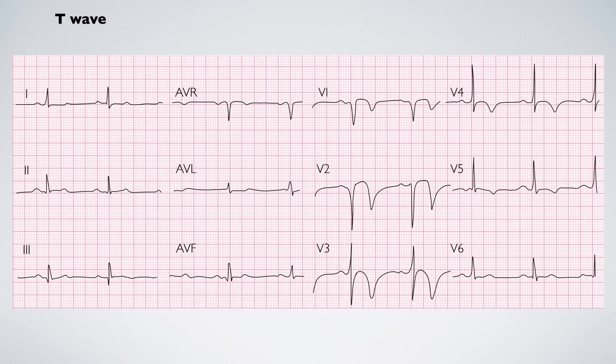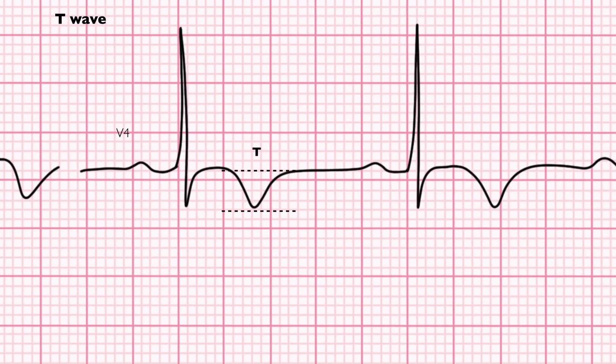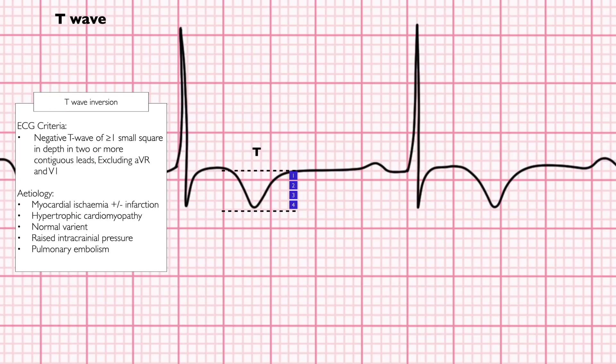This ECG shows T-wave inversion. This is significant if the T-waves have a negative depth of one small square or more and are present in two or more anatomically grouped leads. This is a typical finding in non-ST elevation myocardial infarction.